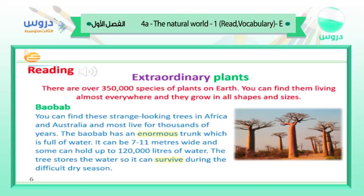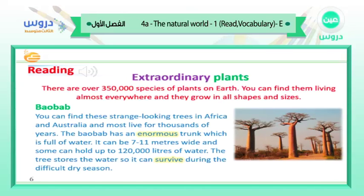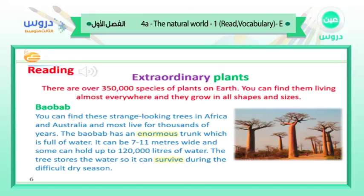Baobab: you can find these strange-looking trees in Africa and Australia, and most live for thousands of years. The baobab has an enormous trunk which is full of water. It can be seven to eleven meters wide, and some can hold up to a hundred and twenty thousand liters of water. The tree stores the water so it can survive during the difficult dry season.